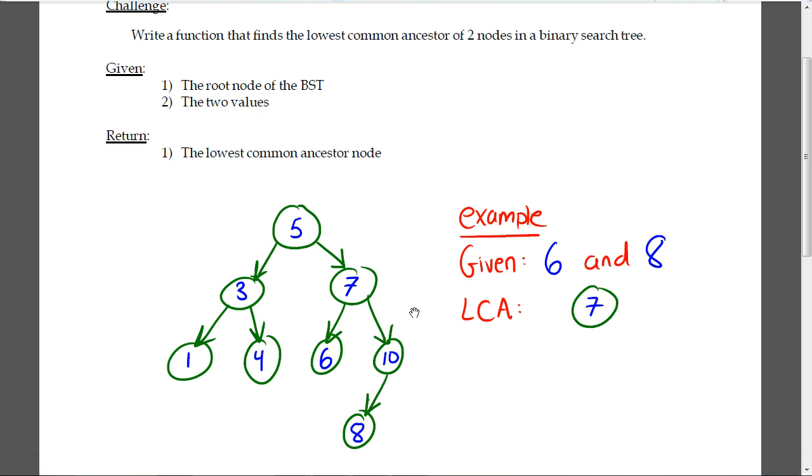This is just one example of a binary search tree that you would be given. You'd have to process it based on the two integers you're given and return their lowest common ancestor according to your algorithm that you're going to be designing.